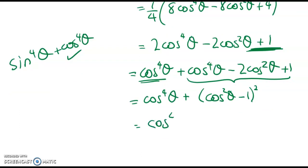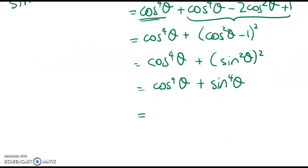And we like that because we're finished. We've got cos to the power of 4 theta plus sin squared of theta all squared, which is cos to the power of 4 theta plus sin to the power of 4 theta, which is equal to the left-hand side as required.